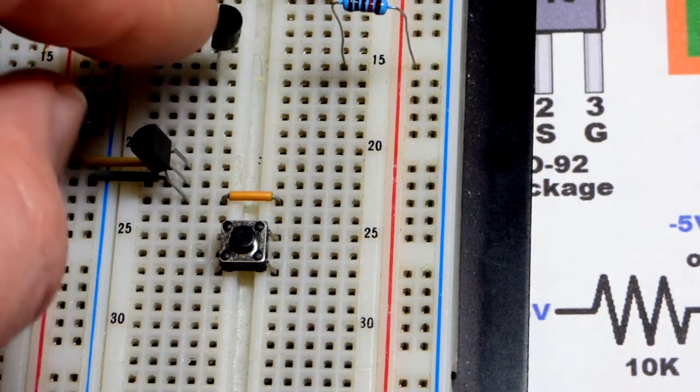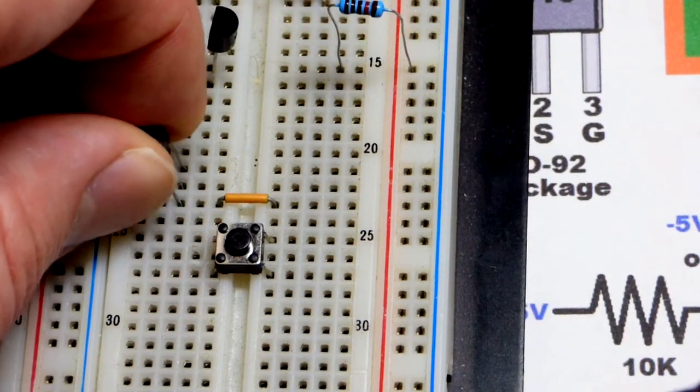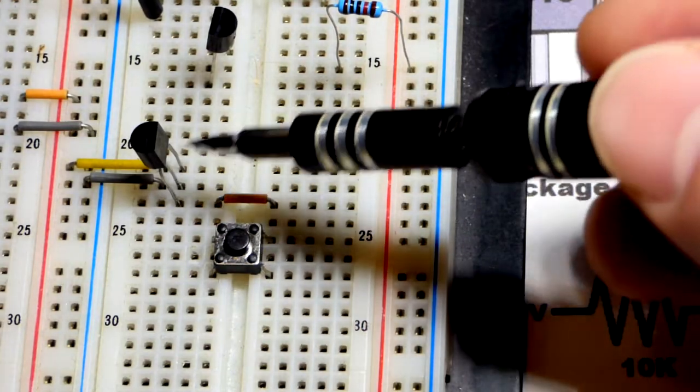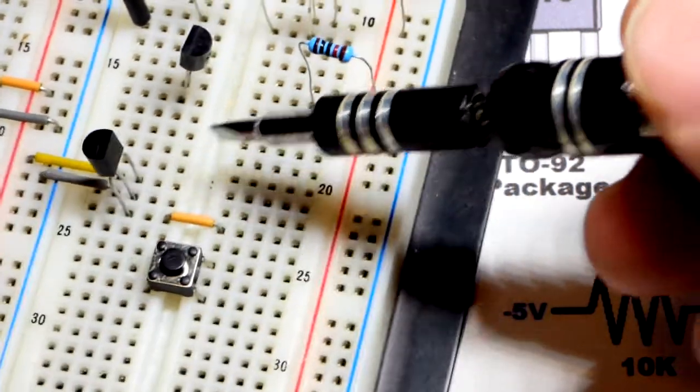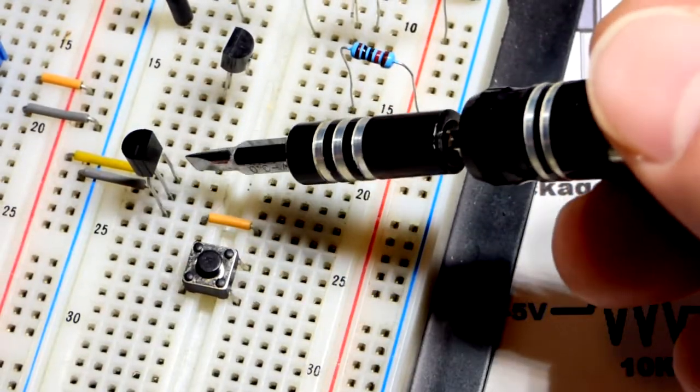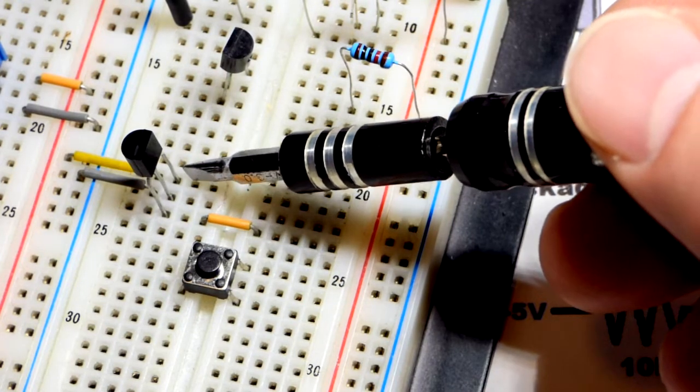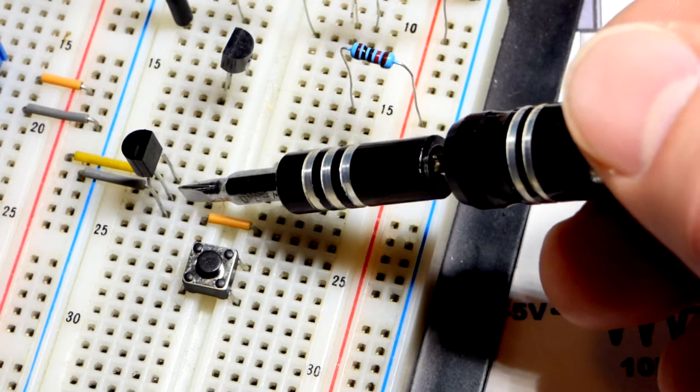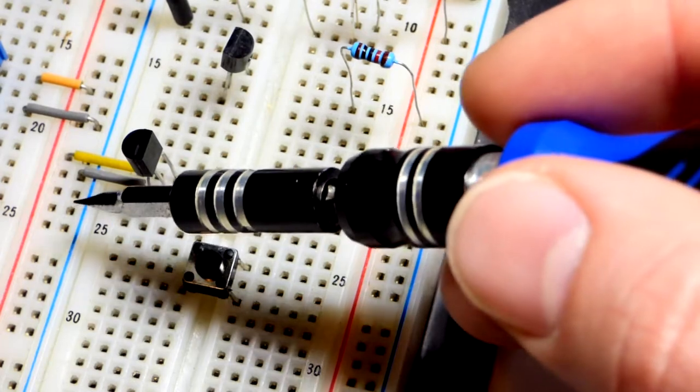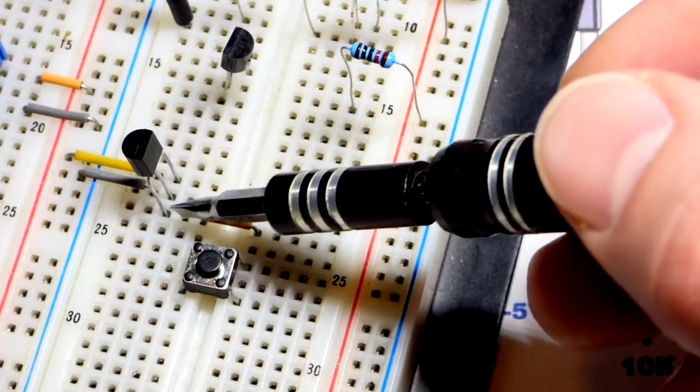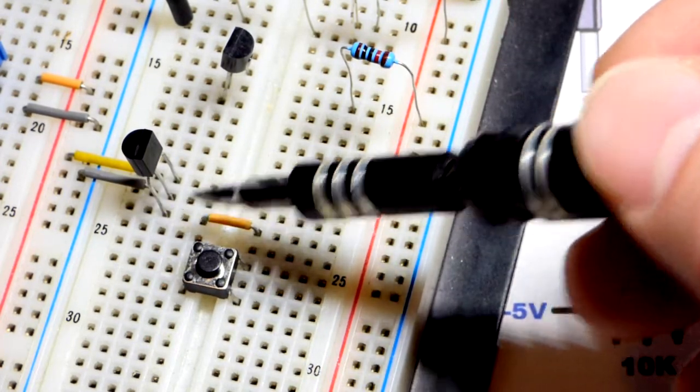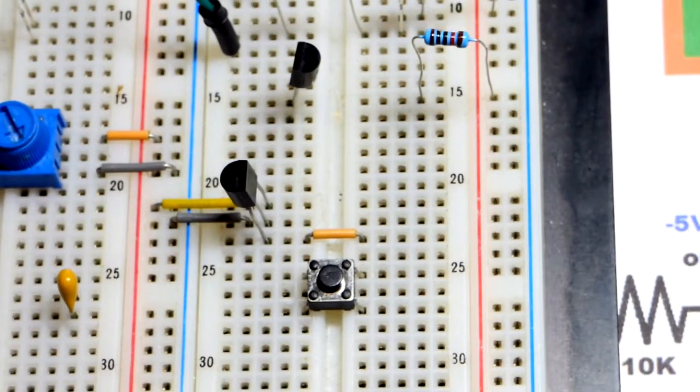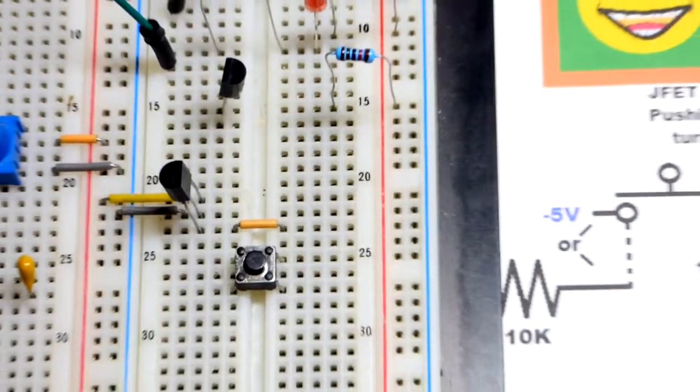It looks like a TO92 package. You can see the top pin there which would be the right pin if you're looking at the flat side, that's the in pin. This is the common pin that goes to the negative rail. In goes to the positive rail. And then we have out. So out is going to output half of the power supply voltage.